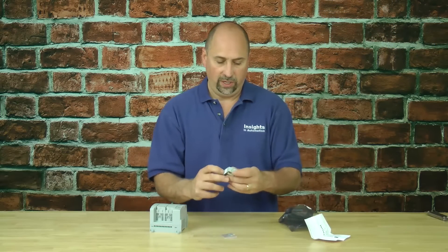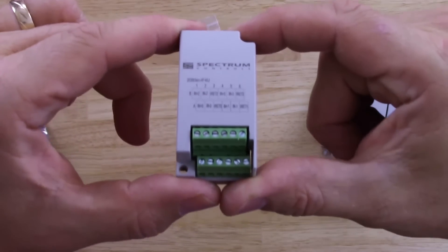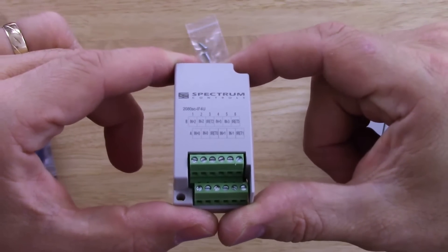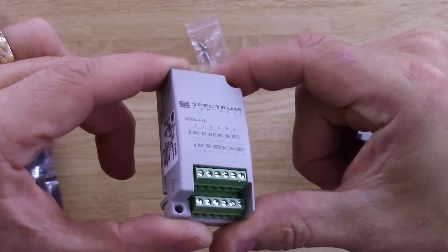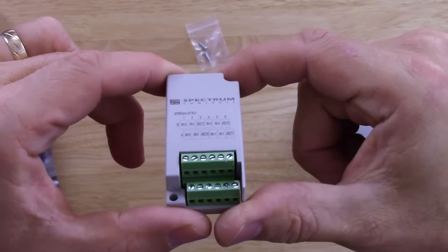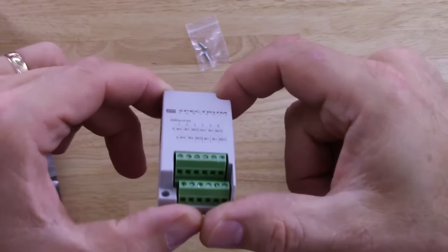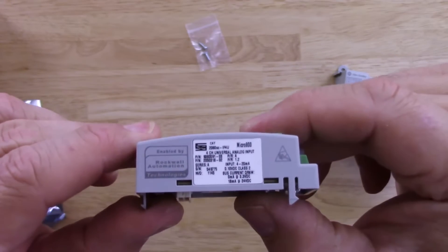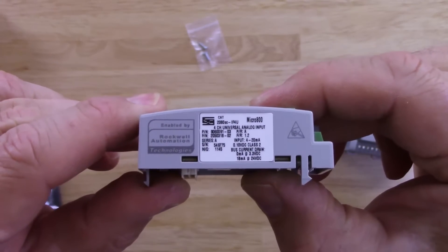And here it is. Let's go ahead and zoom in on it for you. So here we can see the front of the unit with the terminal blocks. Let's take a look at the side and take a look at the label.